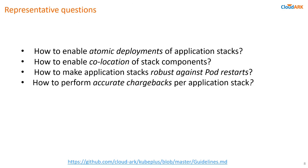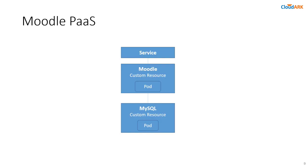In today's talk, I am going to focus on four specific problems and associated guidelines to address them. These problems are: how to enable atomic deployments of application stacks, how to enable co-location of stack components, how to make application stacks robust against pod restarts, and how to perform accurate chargebacks per application stack. To discuss these, I'll use the example of the Moodle PaaS, focusing on two custom resources: Moodle and MySQL cluster.